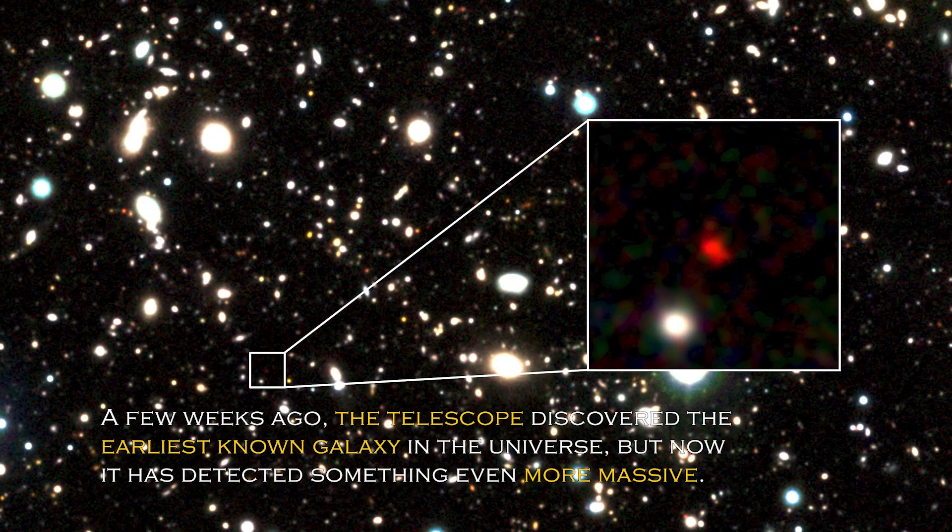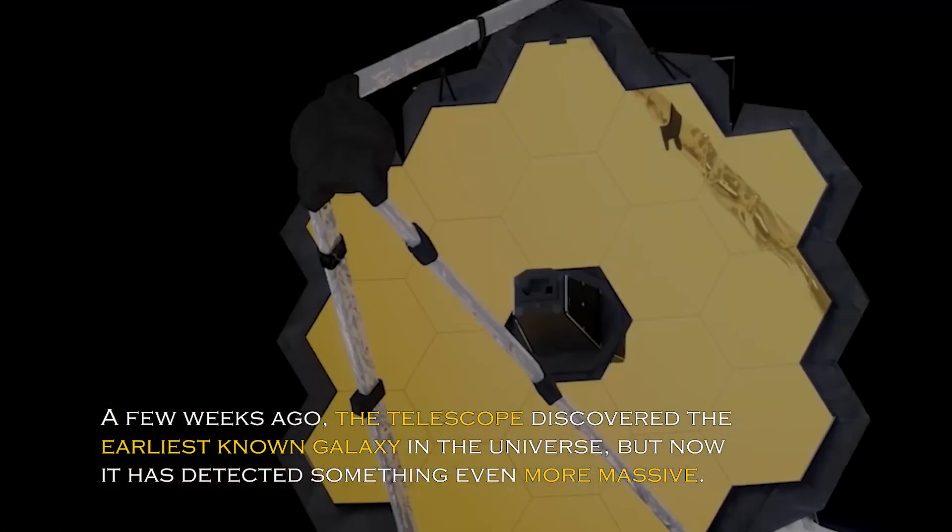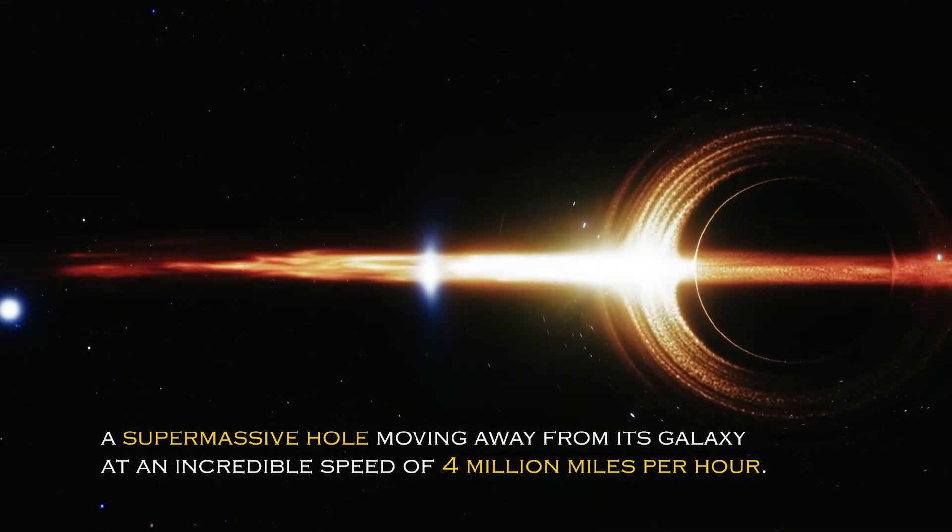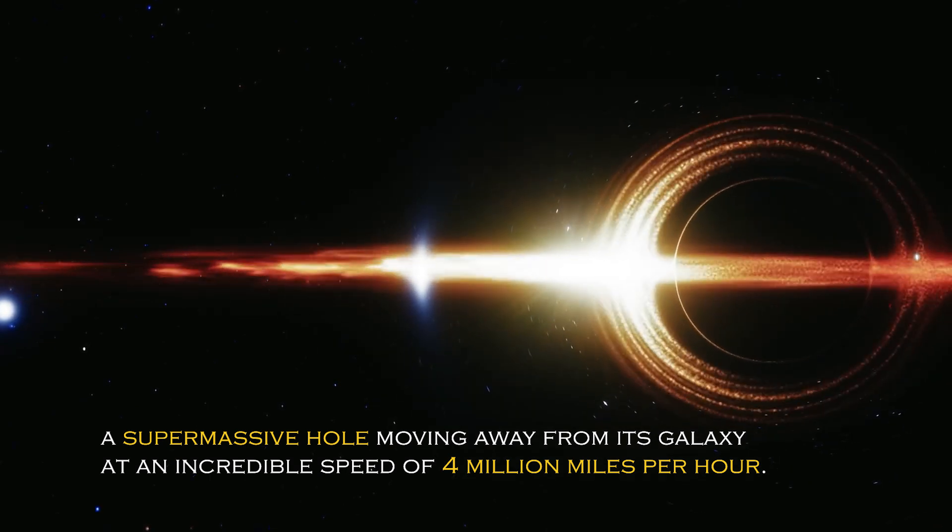A few weeks ago, the telescope discovered the earliest known galaxy in the universe, but now it has detected something even more massive – a supermassive hole moving away from its galaxy at an incredible speed of 4 million miles per hour.